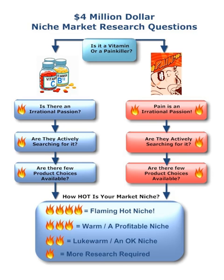It is very important to understand when researching for niches how this works. You need to understand: is it a vitamin or a painkiller — your product or your client's product? You can see there's a branching algorithm. If it's a vitamin, you come down to this side. If it's a painkiller, go to the right side. If it's a painkiller, you automatically get two flames because it's an irrational passion.